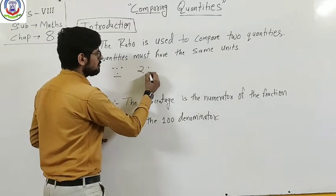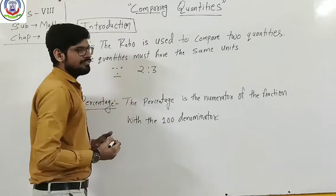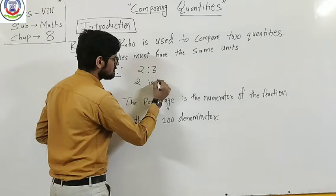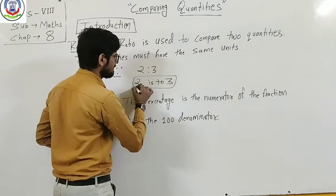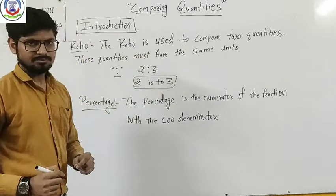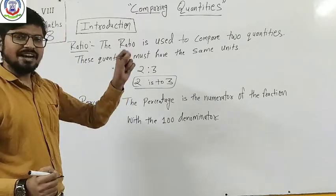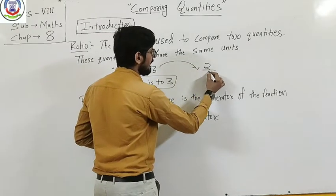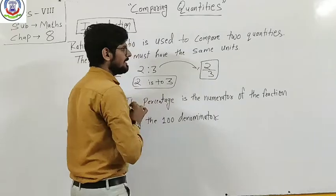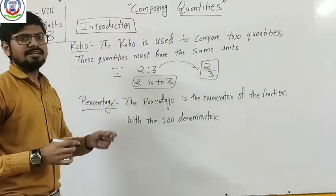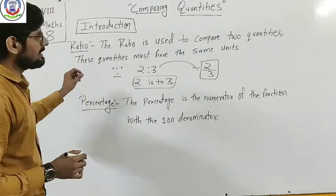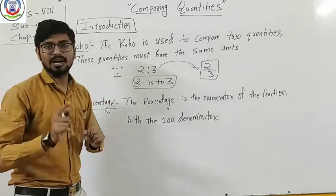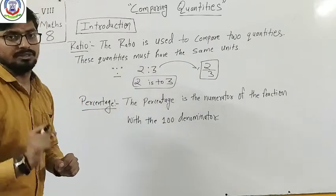For example, 2 ratio 3, or 2 is to 3. Ratio can also be written in fraction form, that is 2 by 3. This is the ratio of the same unit. These quantities which you compare must have the same unit, but the ratio itself has no unit.